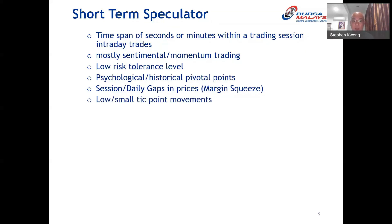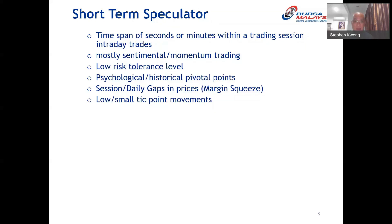Scalpers trade on very low or small tick-point movements — they just look at small point movement and take profit immediately, doing many trades within a day. The size of those point movements depends on the volatility of the product. If volatility is low, 3 to 5 points and they take profit or cut loss. For FCPO, sometimes 10 to 20 points before they take profit, depending on volatility.